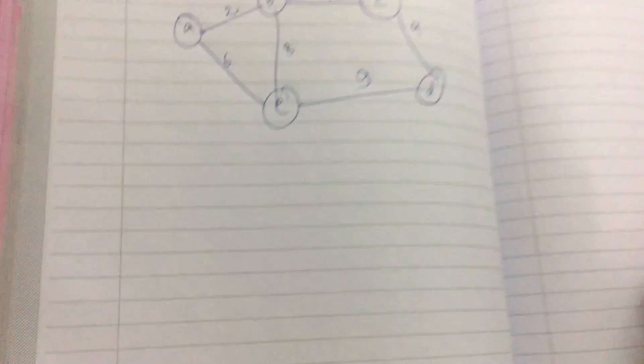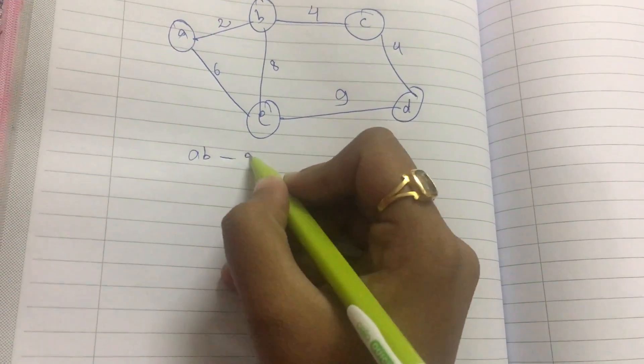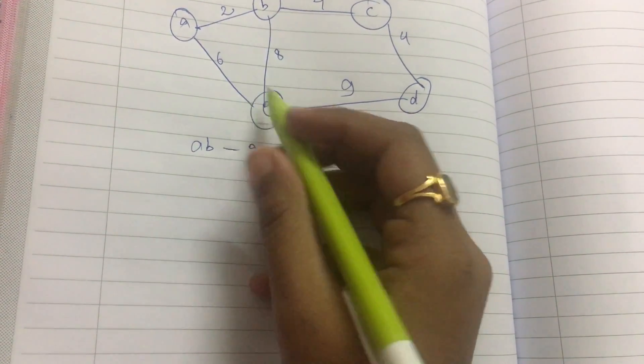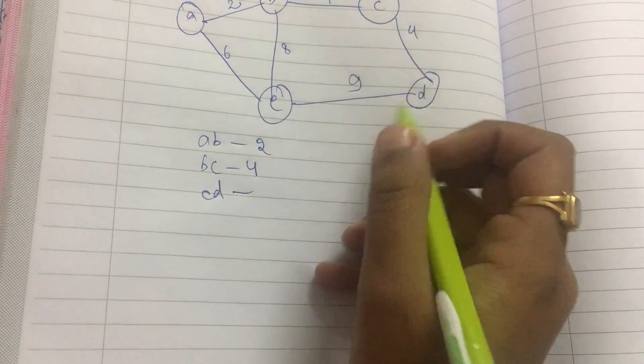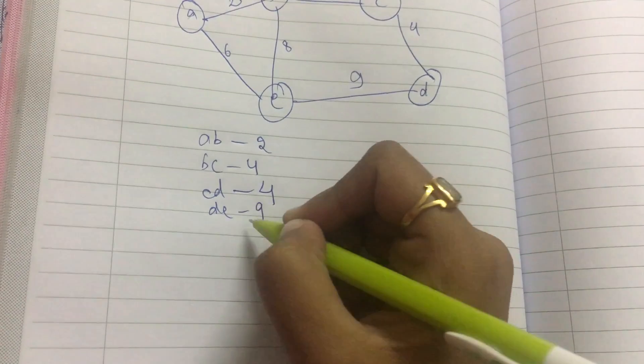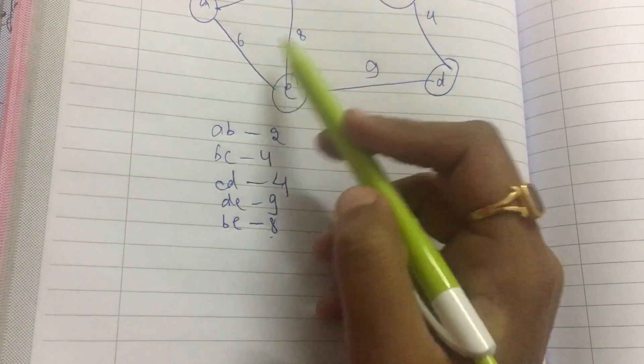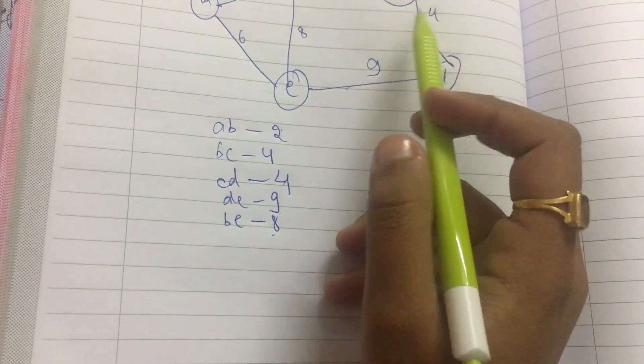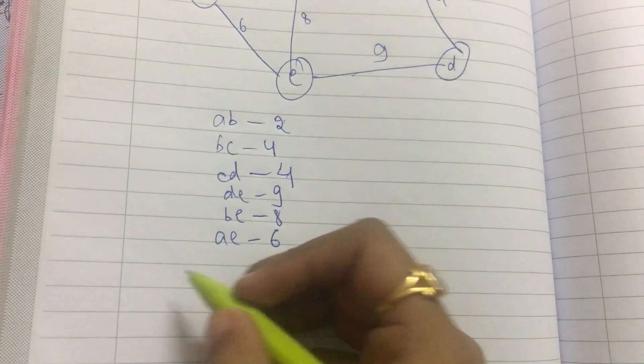What does an edge table mean? An edge table means that I note all the edges. From A to B I have 2, then B to C I have 4, C to D I have 4, D to E I have 9, and B to E I have 8. A to E is left, A to E is 6.